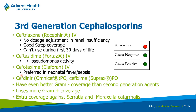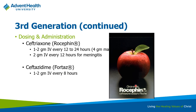Cefdinir is a nice common oral third-generation option with a long half-life — similar to ceftriaxone, you can use once-daily dosing. Third-generation cephalosporins have better gram-negative coverage than second-generation, including extra coverage against Serratia marcescens. If you have a patient coming in for severe upper or lower respiratory tract infections, ceftriaxone is going to be one of the common ones used. If you have meningitis, you may give it more frequently to ensure good CNS penetration.